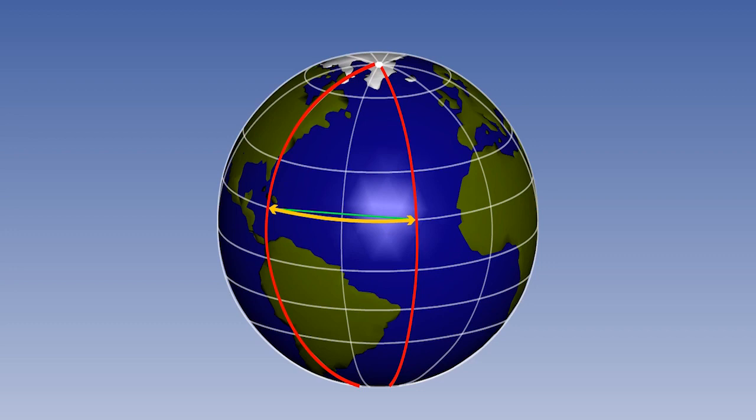It's also possible to calculate either the rhumb line or the great circle distance between two points not at the same latitude, but these are not departure either. It has to be along the parallel of latitude to meet the definition.